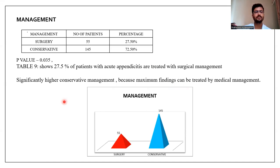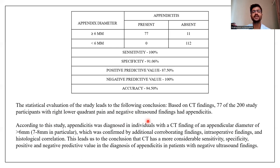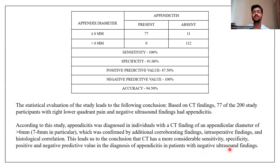Regarding management, in the majority of cases management was done conservatively. However, 27% of patients underwent surgical management. The statistical evaluation leads to the conclusion that 77 of 200 study participants with right lower quadrant pain and negative ultrasonographic findings had appendicitis on CT. Appendicitis was diagnosed in individuals with CT findings of appendicular diameter greater than 6 mm, particularly 7 to 8 mm, confirmed by intraoperative findings and histological correlation. This leads to the conclusion that CT has more considerable sensitivity, specificity, and positive and negative predictive value in the diagnosis of appendicitis in patients with negative ultrasound findings.